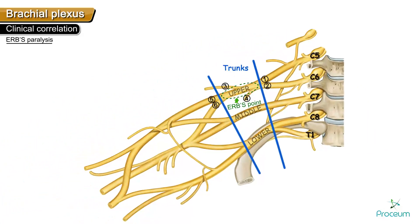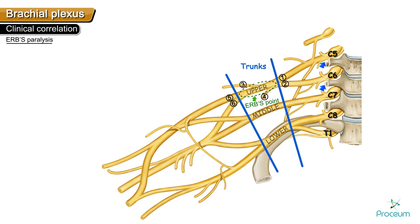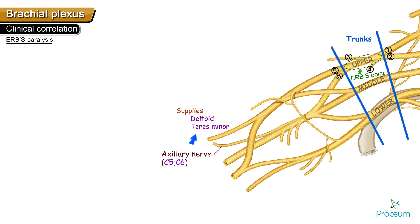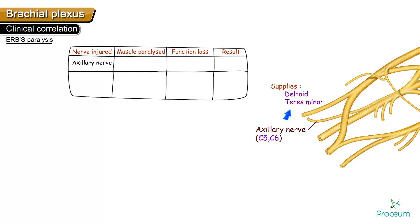In Erb's paralysis, C5 and C6 roots are affected. The suprascapular nerve, which supplies supraspinatus, is affected. The axillary nerve, with a root value of C5 and C6, is also affected — it supplies deltoid and teres minor. Thus, in Erb's paralysis, the action of deltoid is lost, leading to loss of abduction of the shoulder and an adducted shoulder.